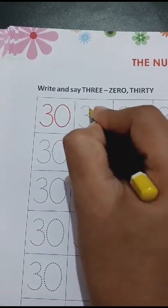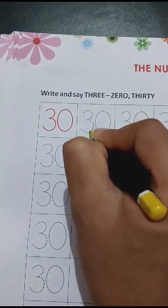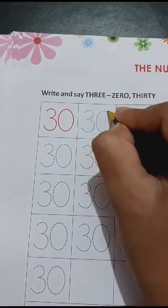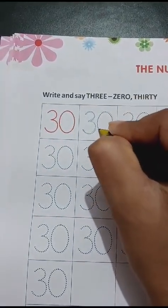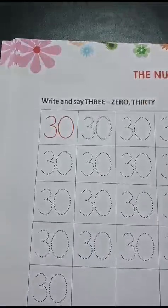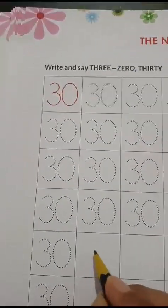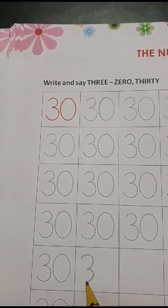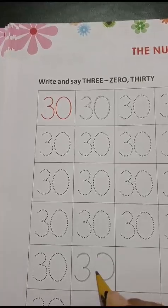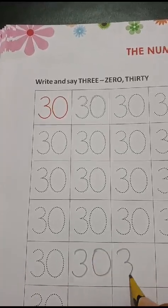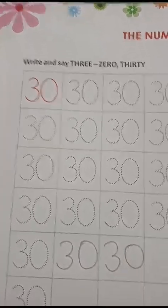Now let's do 30. 3, 0, 30. 3, 0, 30. 3, 0, 30.